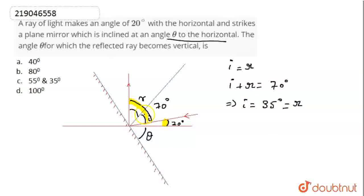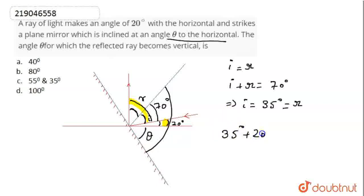This angle is 35 degrees and this angle is 35 degrees. Looking at the theta value: the normal to the mirror is 90 degrees. We have 35 degrees plus 20 degrees plus theta equals 90 degrees. So theta equals 35 degrees. With the mirror inclined at 35 degrees, the 20-degree incident ray will reflect in the vertical direction.